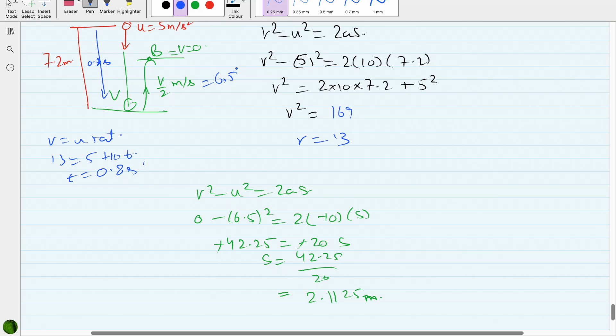For the time, v = u + at. We know that at the highest point velocity is 0, initial velocity is 6.5, and acceleration is -10. So 0 = 6.5 - 10t, which gives -6.5 = -10t, and time = 0.65 seconds.